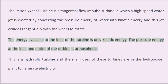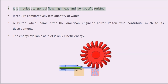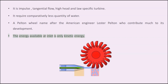This is a hydraulic turbine and the main uses of these turbines are in the hydropower plant to generate electricity. It is an impulse, tangential flow, high head, and low specific speed turbine. It requires comparatively less quantity of water. The Pelton wheel is named after the American engineer Lester Pelton, who contributed much to its development. The energy available at the inlet is only kinetic energy.